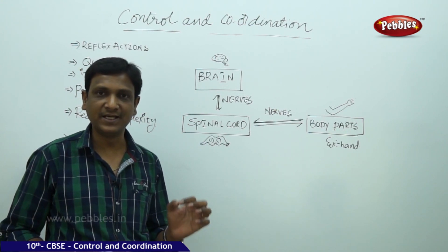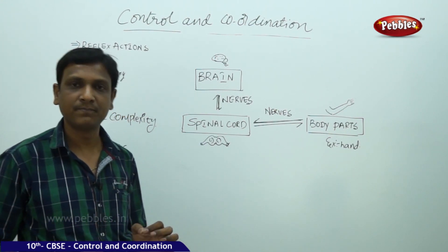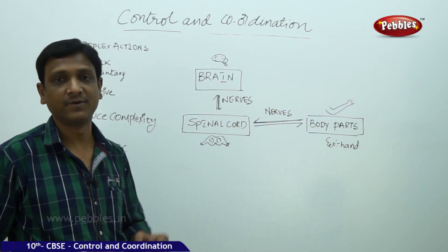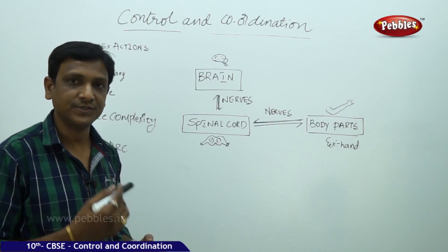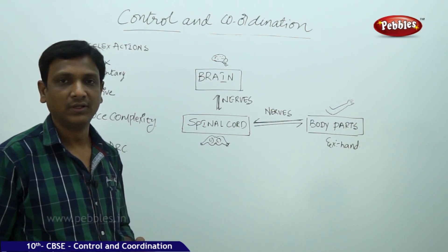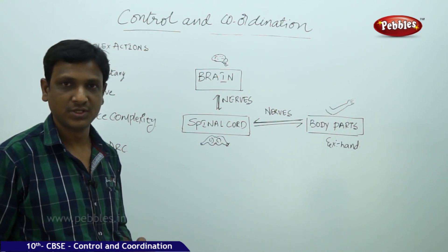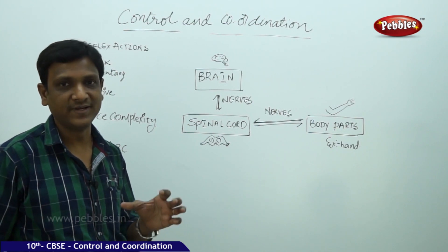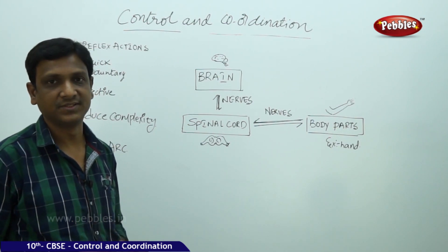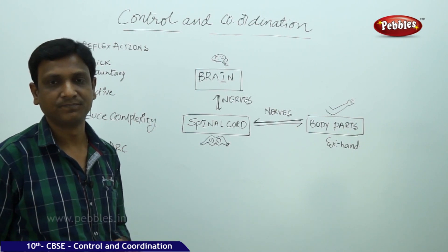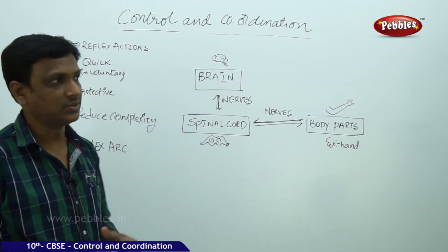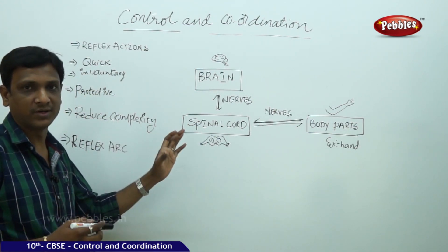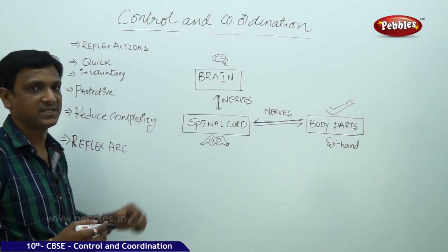This information is carried to other parts of the nervous system, where analysis of the information takes place. What is that information? What is the change? Is it useful or harmful? What kind of response has to be produced? What type of movements are to be produced in the body? These kinds of decisions are taken by the nervous system, which is a very organized system with different parts, each performing a specific function.